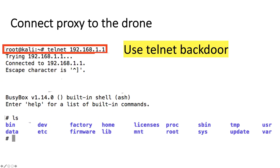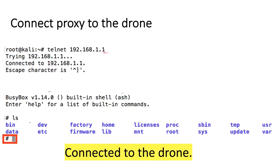On the Raspberry Pi, I'm issuing the Telnet command to the IP address of the drone, and I'm connected to the drone. Once on the drone, I run the LS command — the Linux command to list the current directory — and see all these directories sitting on the drone. It also shows that once connected, a BusyBox built-in shell is displayed, meaning that the drone is actually running a version of Linux.